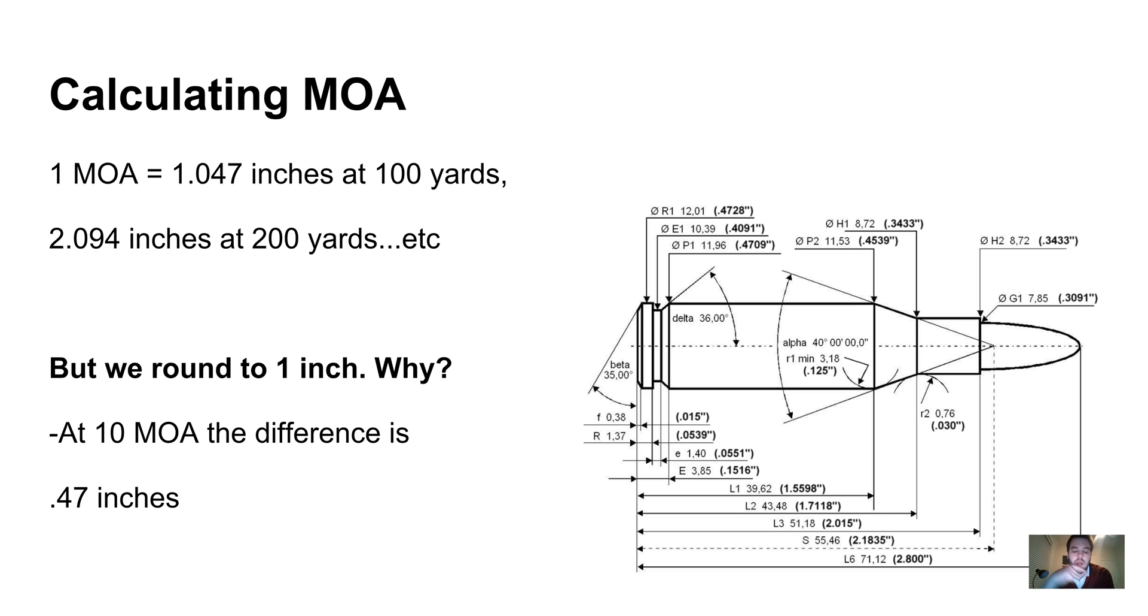The disadvantage of MOA is that it's much harder to calculate mathematically, especially in your head on the fly. When you're looking down that scope, you don't want to take your eye off the target if you don't have to. The reason why rounding to one inch doesn't really make much of an effect when you're just beginning is because the difference isn't that significant.